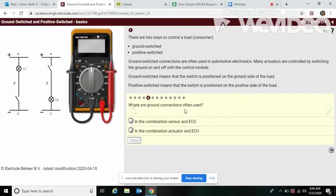Where are ground connections often used? Well, I hear it says many actuators are controlled by switching the ground on and off with the control module. So it's an actuator and the ECU is electronic control unit. So that's our control module.